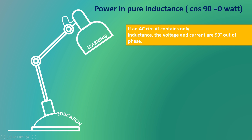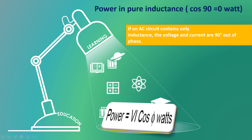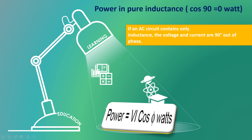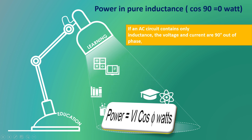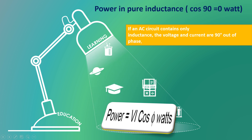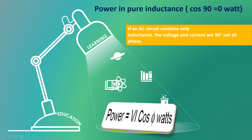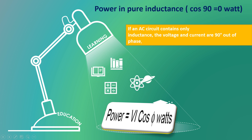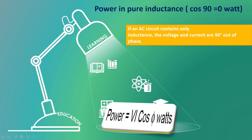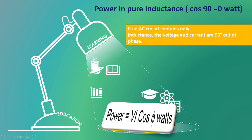Power in pure inductance — this is a very important formula. The power in pure inductance is: power equals to V into I cos theta. Cos 90 degree equals to 0. Therefore, power in pure inductance is 0 Watt. Because if an AC circuit contains only inductance, the voltage and current are 90 degree out of phase. Therefore, power in pure inductance is 0 Watt.